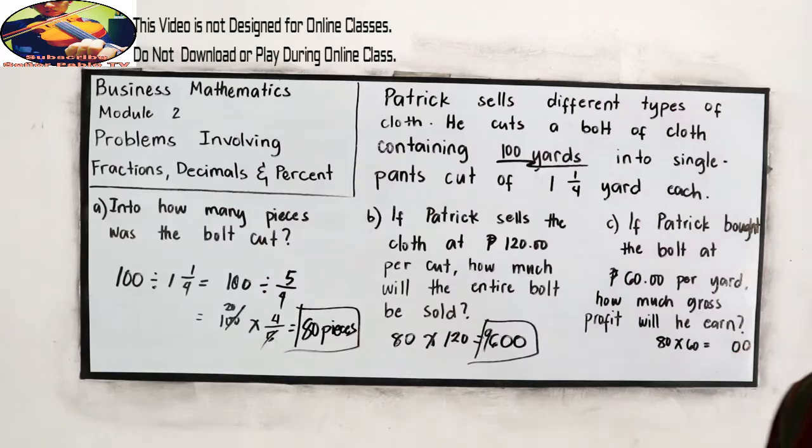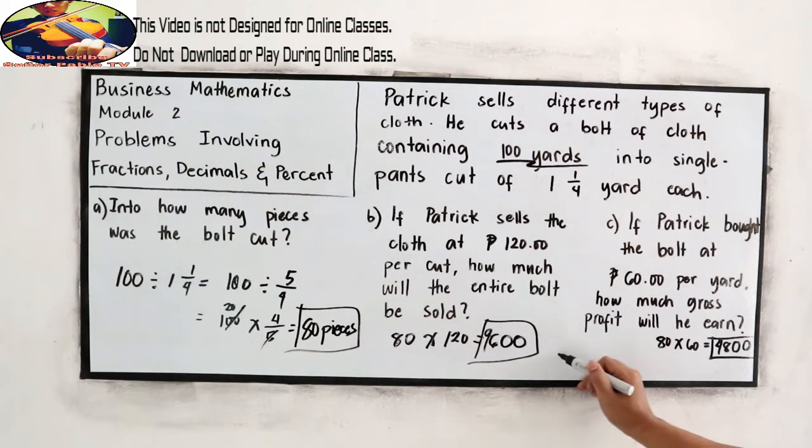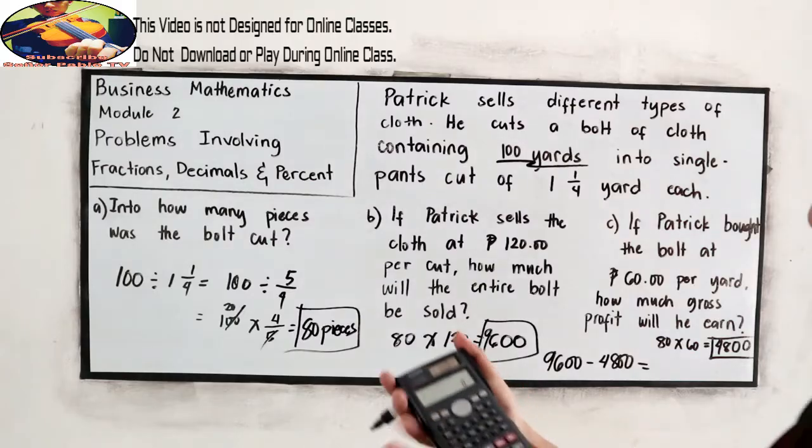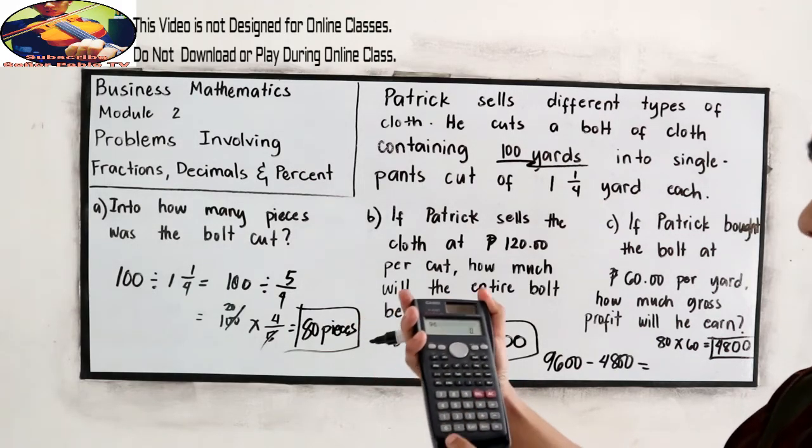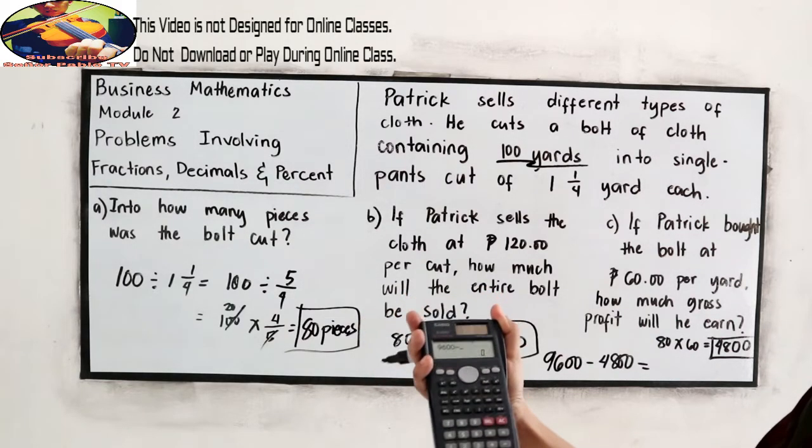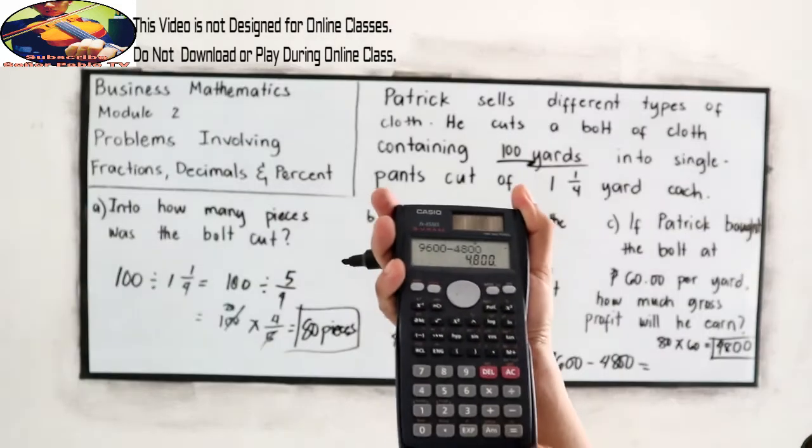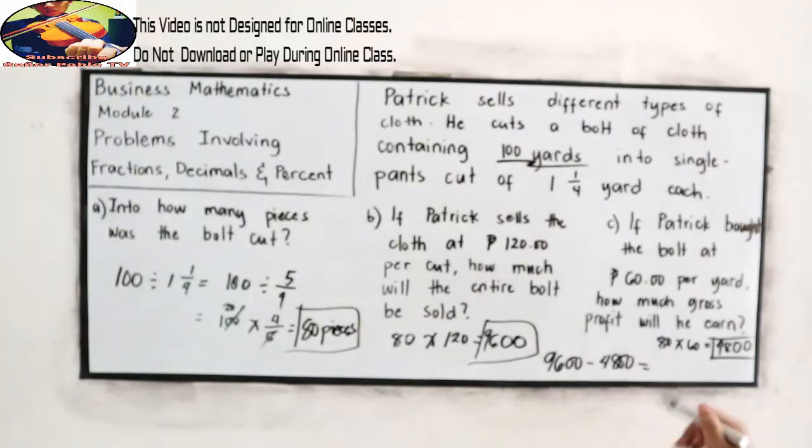His capital is 4,800 pesos. We subtract 9,600 minus 4,800. This will be the gross profit. 9,600 minus 4,800 equals 4,800.